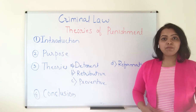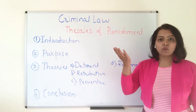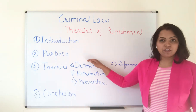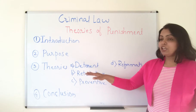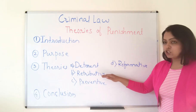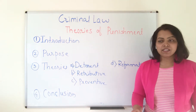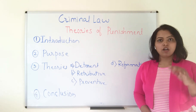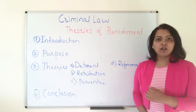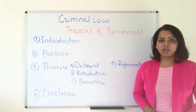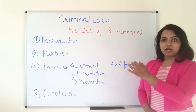While writing your answer sheet please follow the pattern. Start with an introduction about the administration of justice and theories of punishment, then the purpose of theories of punishment. In every country we have two major types of law: civil law and criminal law. Civil law deals with transactions between private parties, while criminal law deals with transactions where some crime has happened and the second party is the state.